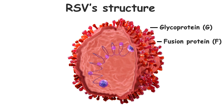Next is the fusion protein, or F-protein. Think of it as RSV's entry key into human cells. It facilitates the merger of the virus with the host cell membrane, a crucial step for the virus to infiltrate and begin its replication.